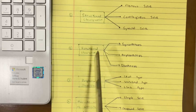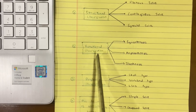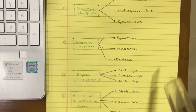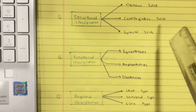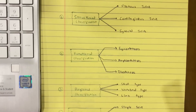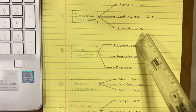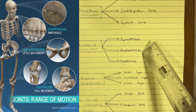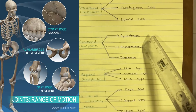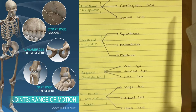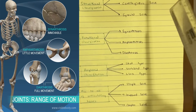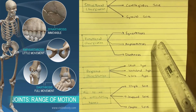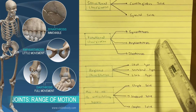The functional classification is according to the degree of mobility. It is divided into synarthrosis, amphiarthrosis, and diarthrosis. Synarthrosis — 'syn' refers to fixed or together, meaning united. These joints are immobile. Amphiarthrosis joints are slightly mobile, similar to the secondary cartilaginous joint. The third is diarthrosis — these are freely movable joints, like the synovial joints.